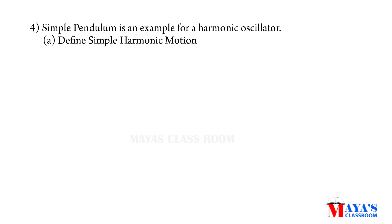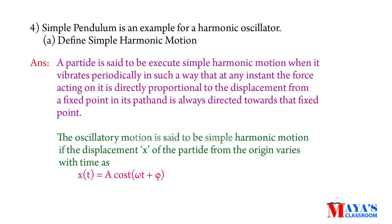A simple pendulum is an example of a harmonic oscillator. Simple harmonic motion is defined as: when a body vibrates periodically such that at any instant the force acting on it is directly proportional to the displacement from a fixed point and always directed towards that fixed point. The displacement equation is x(t) = A cos(ωt + φ), where A is amplitude, ωt + φ is the phase, and ω is the angular frequency.